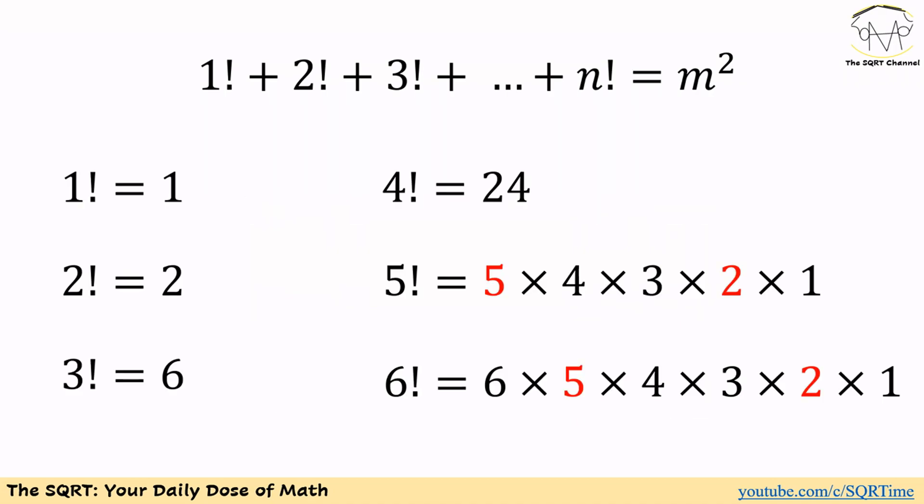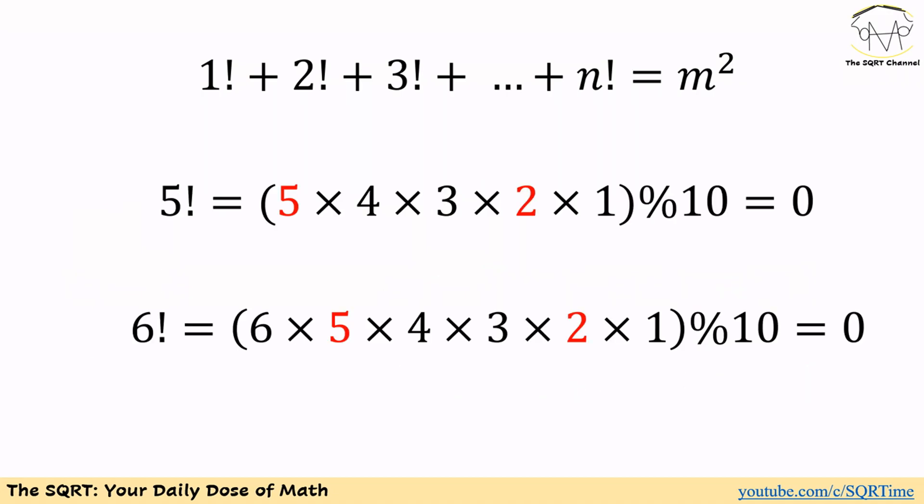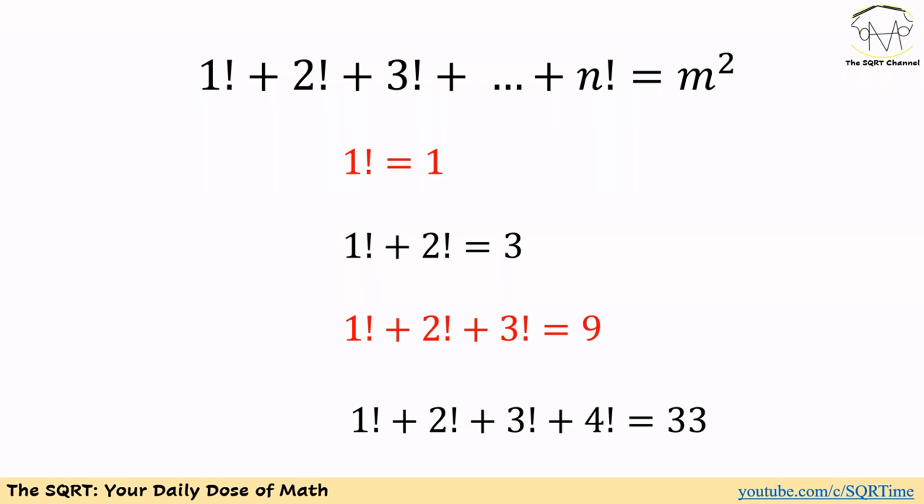To find the pattern, consider 5 factorial: 5 times 4 times 3 times 2 times 1. You can see 5 times 2 which is 10. This same factor appears in 6 factorial, 7 factorial, and all higher factorials. This means 5 factorial is 120, with 0 as its rightmost digit, because of the 5 times 2 factor.